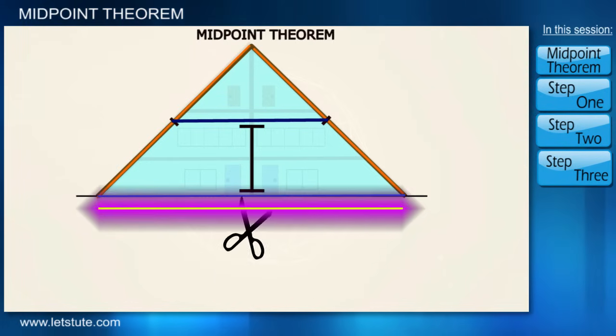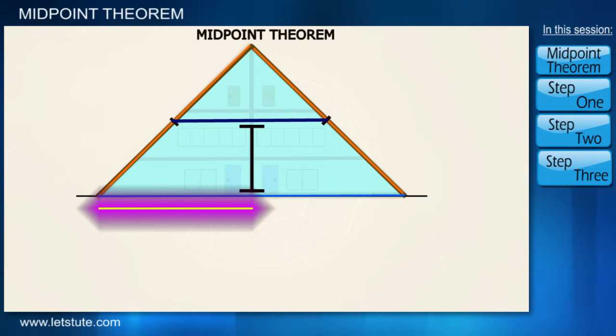And about the length of the light string, it will be half of the base of the building. It means if base measures 50 meters, then the length of the lighting will be 25 meters.